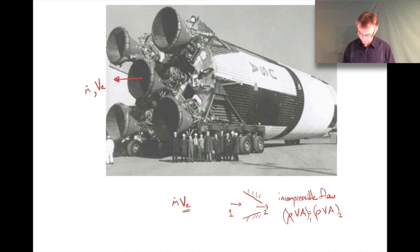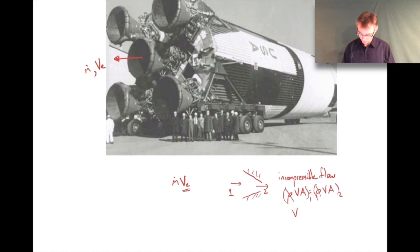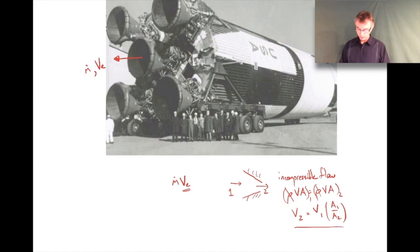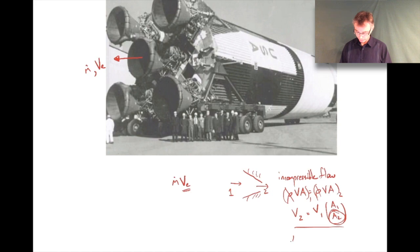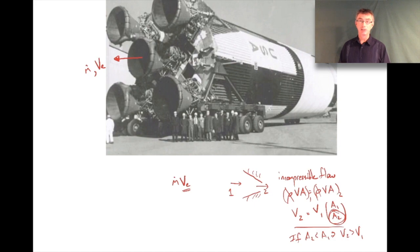If it's incompressible, the densities cancel out and you see that V2 equals V1 times A1 over A2. So if you decrease the area - if A2 is less than A1 - then V2 will be greater than V1. If you want to increase the exit velocity for an incompressible flow, you want to decrease the area, and that should give you more thrust.